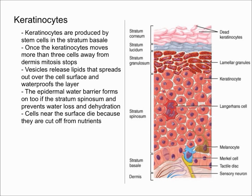Once the keratinocytes move up a bit, vesicles release lipids and a mixture that spreads out over the cell surface and waterproofs the cells. What forms is called an epidermal water barrier, and it forms on top of the stratum spinosum, preventing dehydration and helping prevent water loss. The stratum spinosum is that giant layer right there.